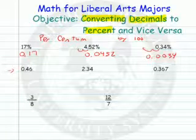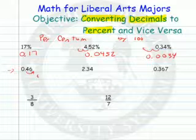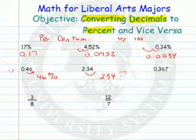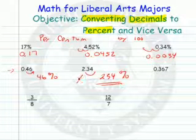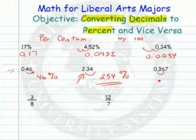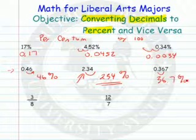Moving two places to the right, this would be 46.36%. Here we would move two places to the right to get 234% — notice that's more than a hundred percent, because there's more than one whole. And the last one: two places to the right gives us 36.7%.